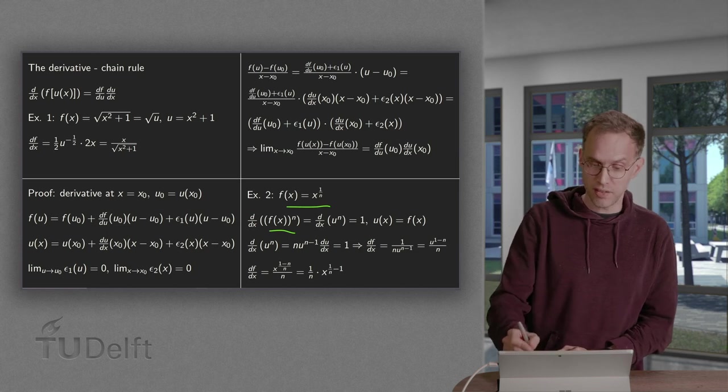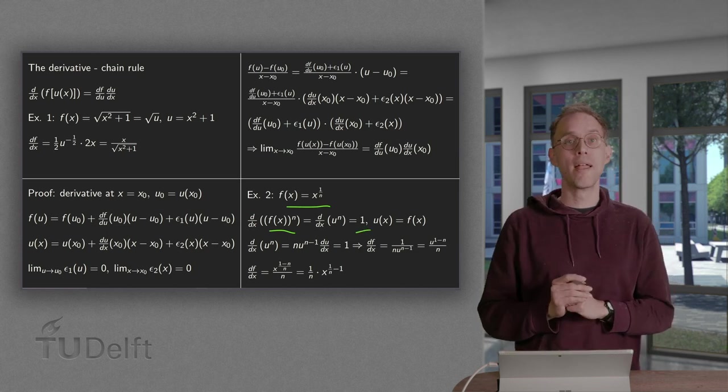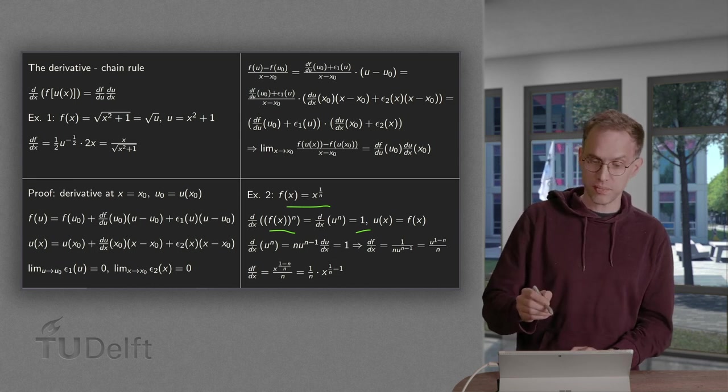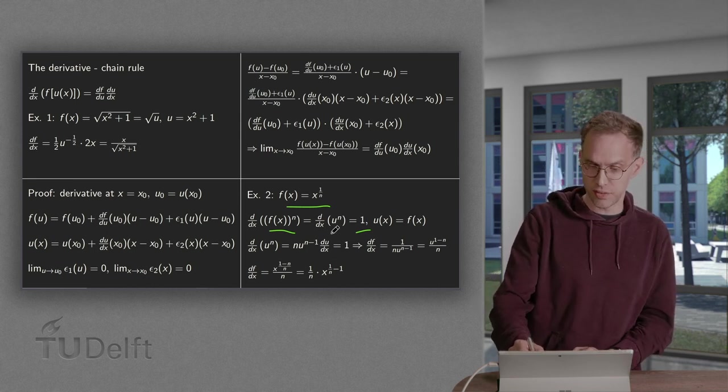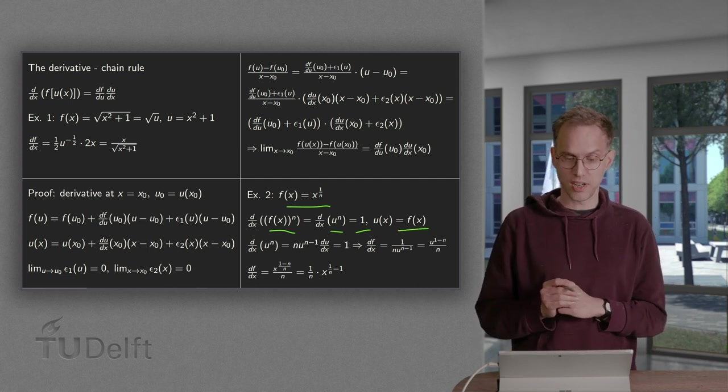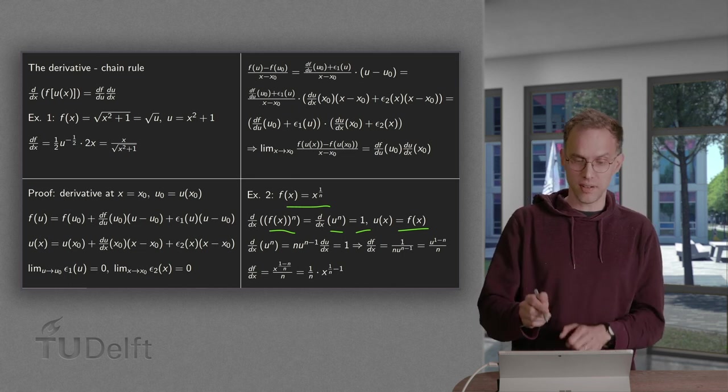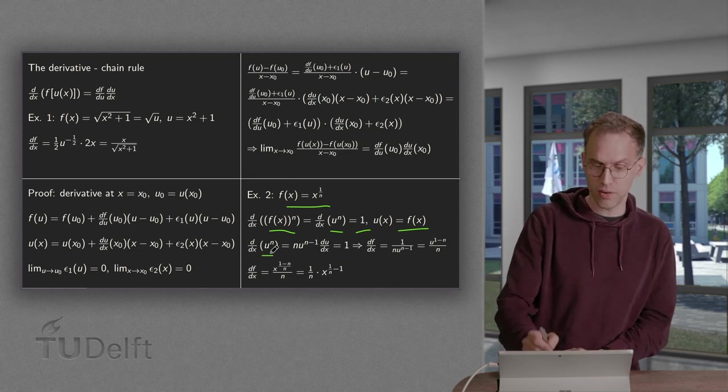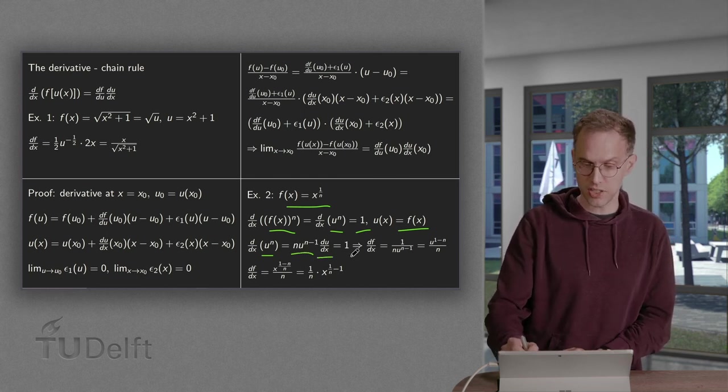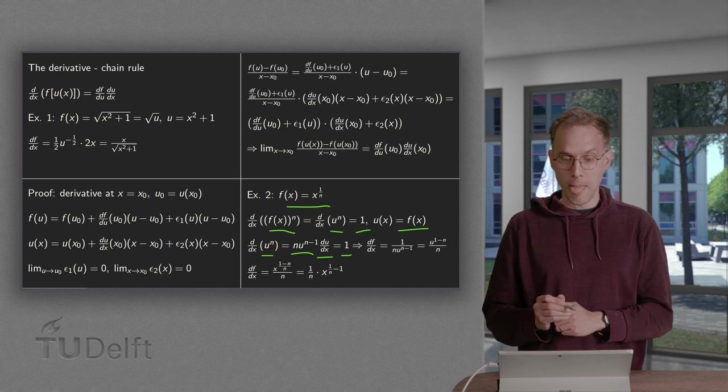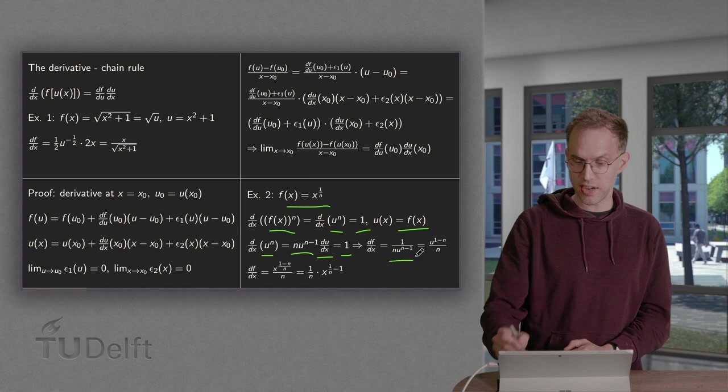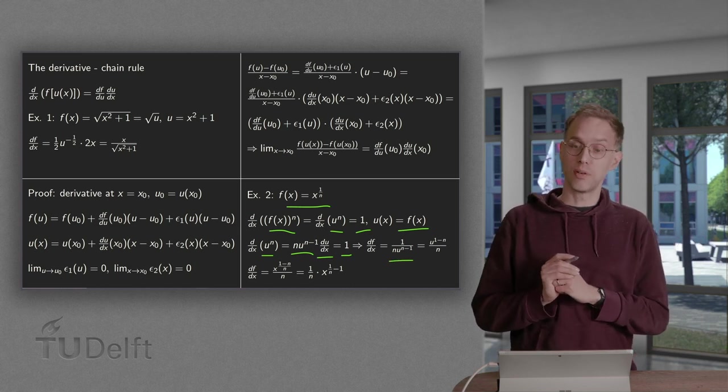Now we can also use the chain rule to compute this derivative. That means we have the d/dx of u to the power n where u(x) equals f(x). Using the chain rule to compute this derivative we get the derivative of u^n with respect to u. n times u to the power n minus 1 times du/dx equals delta is 1. So this means that du/dx equals df/dx equals 1 divided by n u to the power n minus 1.